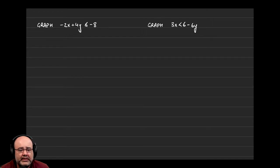Let's graph -2x + 4y ≤ -8. As we have in past examples, we start by writing it as an equation so it's a little bit easier to graph.